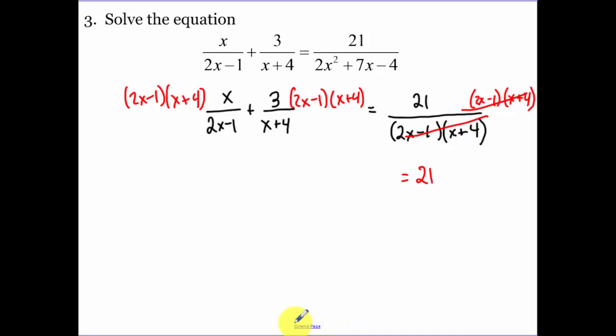Notice how I'm multiplying each one of the terms by that. On the right they cancel. Now on the left, 2x minus 1's cancel, so I have x times x plus 4. On this next term, the x plus 4's cancel, so I have plus 3 times 2x minus 1. Now it's just a matter of simplifying. So I have x squared plus 4x plus 6x minus 3 equals 21.